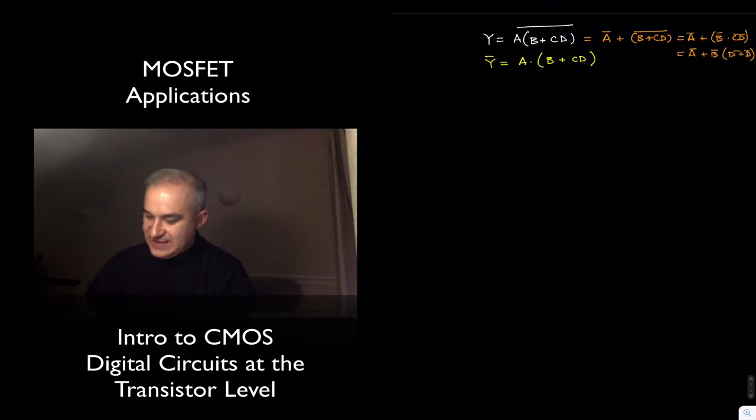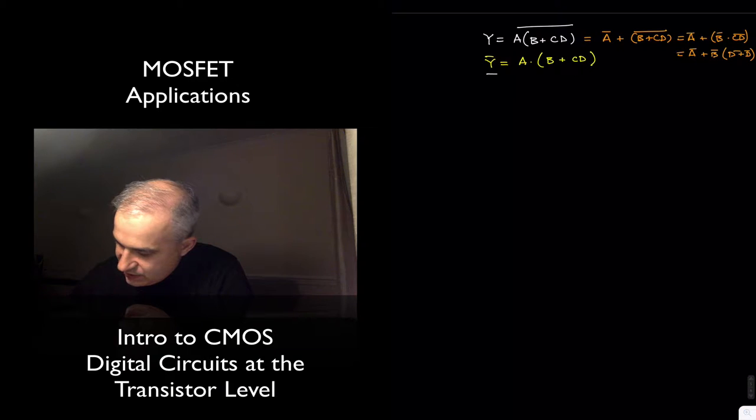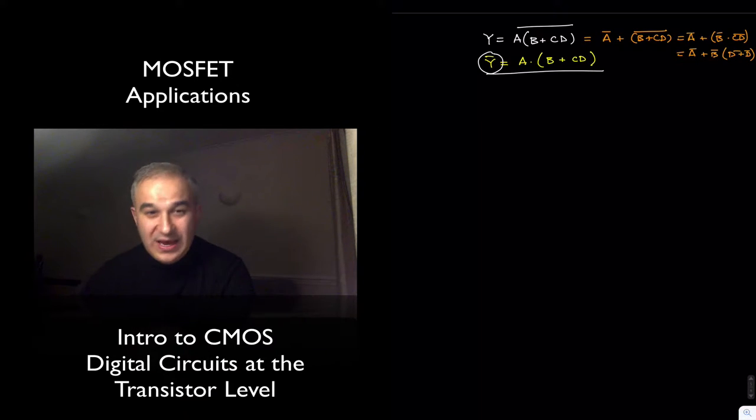So, we have everything that we need to do the design. So first of all, let's start with the pull-down network, meaning when is the output going to be a logical low?